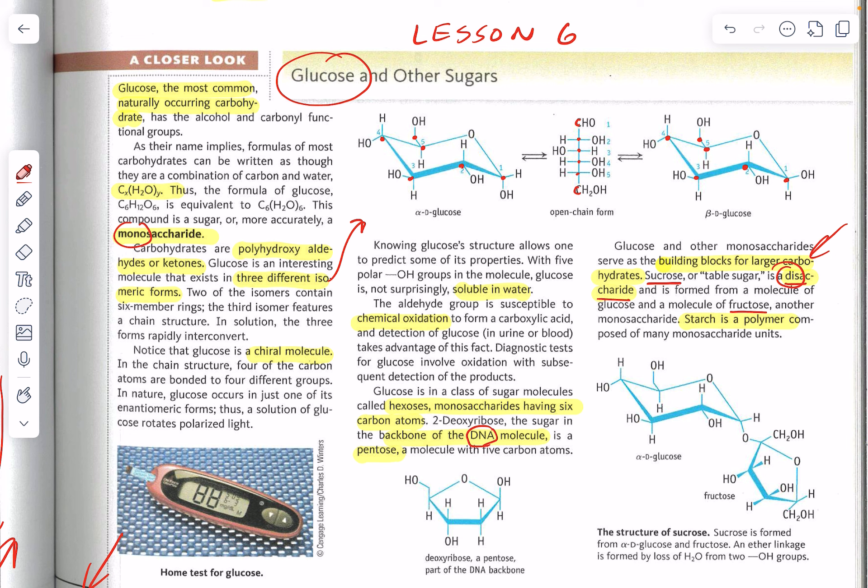A good example of that would be starch, which would be a polymer, a big, long chain of monosaccharides. Saccharide, of course, is another word for sugar. And glucose is also an example of an organic compound that has both the hydroxyls and, on occasion, the carbonyls that we've been studying in the previous screencast.